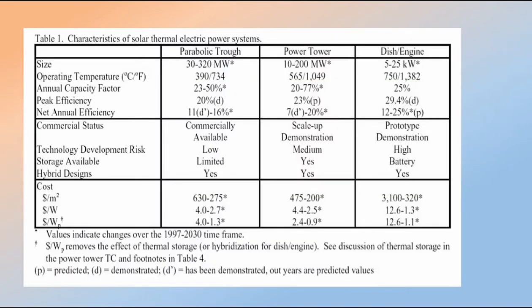A characteristics table compares the parabolic trough, power tower, and dish-Stirling engine by size, temperature, operating efficiency, and cost. The dish or Stirling engine requires a higher operating temperature than the other two. The power tower has a much higher efficiency than the parabolic trough or dish-Stirling engine. The parabolic trough has limited availability of thermal storage.